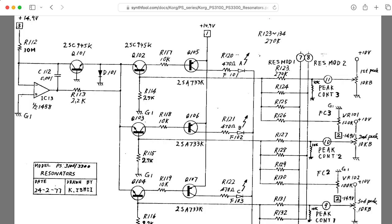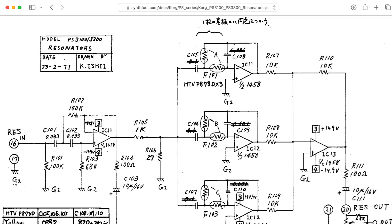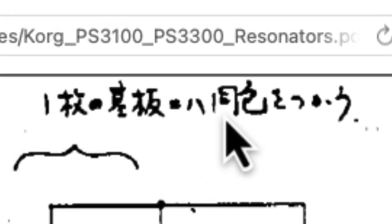One of the most famous circuits in the 3300 is the resonator section, so I thought it would be fun to take a look at that. I'm just curious, if anyone knows what this Japanese says, let me know in the comments below.